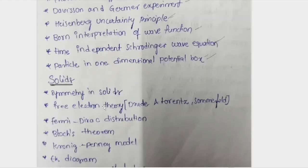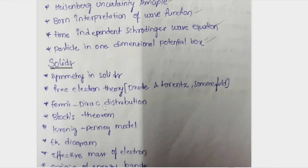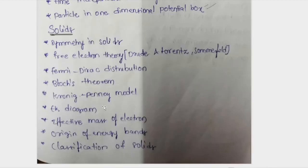Free electron theory, Fermi-Dirac distribution, Bloch's theorem, Kronig-Penney model, E-k diagram, effective mass of electron, origin of energy bands, and classification of solids.